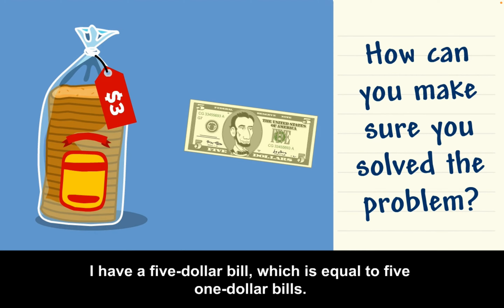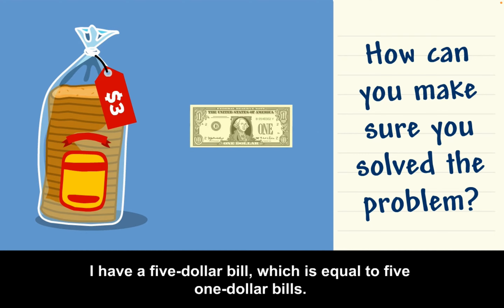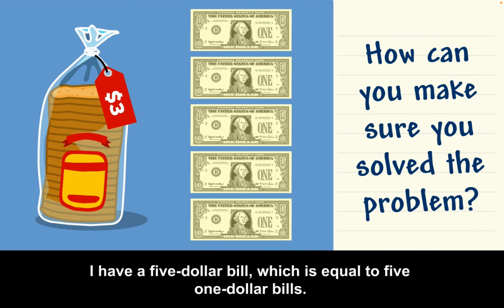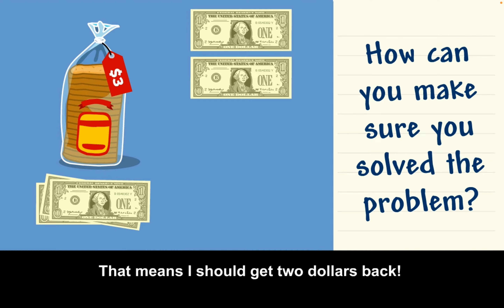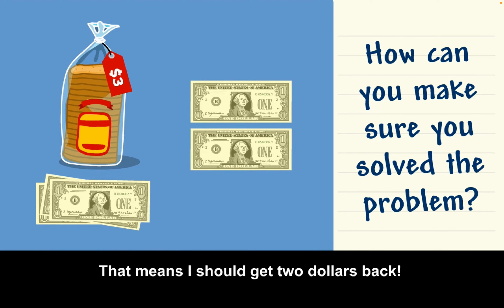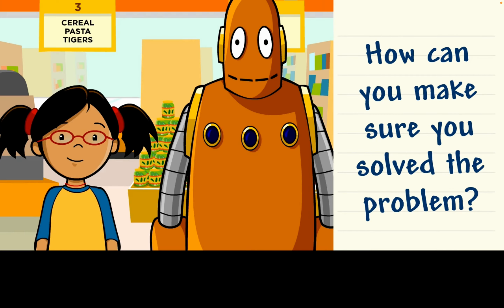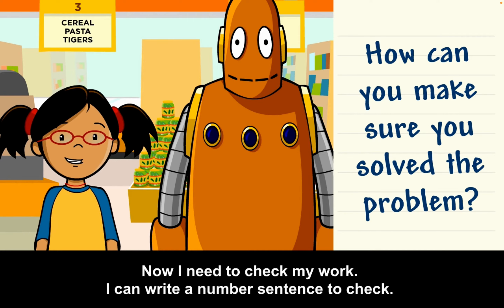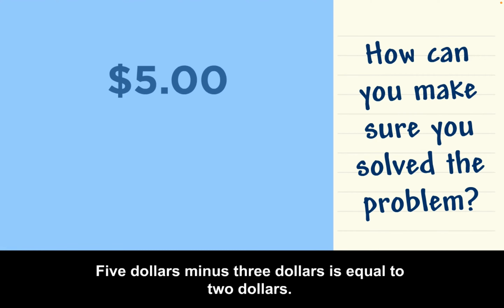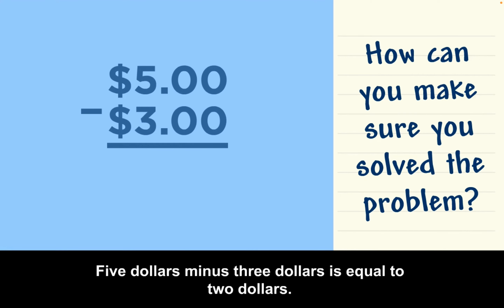I have a $5 bill, which is equal to five $1 bills. The bread costs $3. That means I should get $2 back. Now I need to check my work. I can write a number sentence to check: $5 minus $3 is equal to $2.